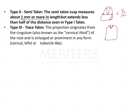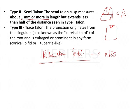The most important syndrome associated with talon's cusp is Rubinstein-Taybi syndrome, and this is also a NEAT and NEET question. Another problem that can occur with talon's cusp is interference with normal occlusion. If this is your lower incisor and this is the upper incisor, a talon's cusp projecting here can lead to difficulty in occlusion.